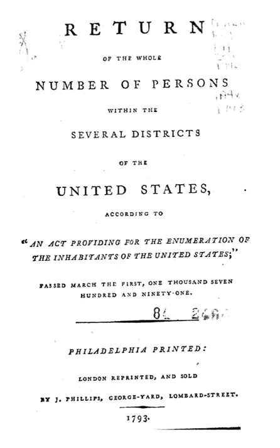Race was asked differently in the 2000 census in several ways. Most significantly, respondents were given the option of selecting one or more race categories to indicate racial identities. Data show that nearly 7 million Americans identified as members of two or more races. Because of these changes, the 2000 census data on race are not directly comparable with data from the 1990 census or earlier censuses. Caution is therefore recommended when interpreting changes in the racial composition of the U.S. population over time.